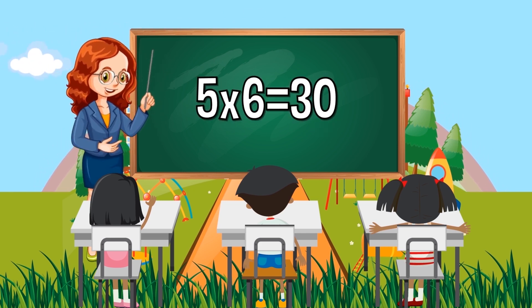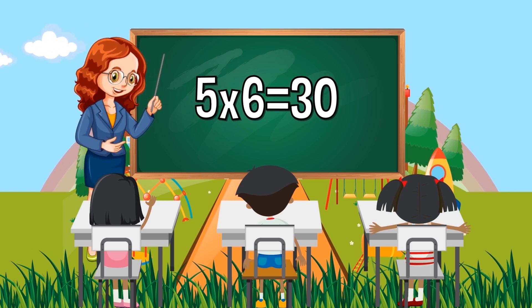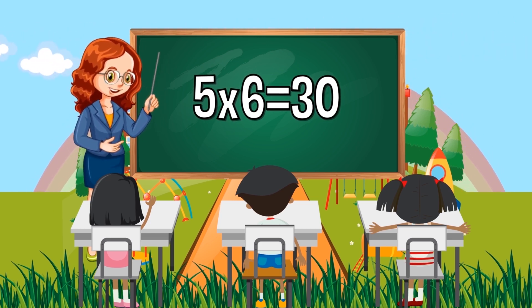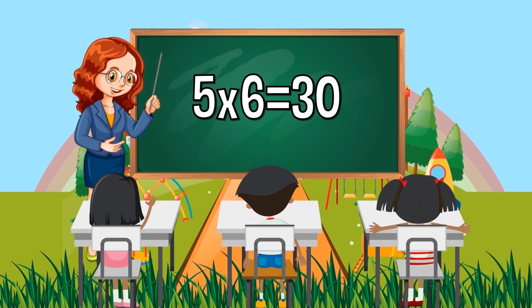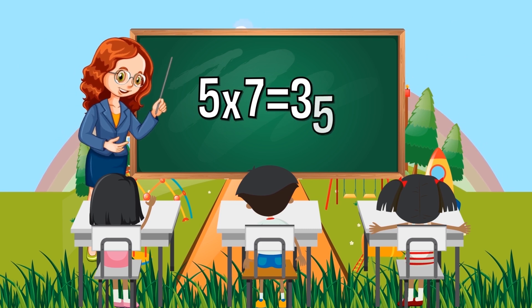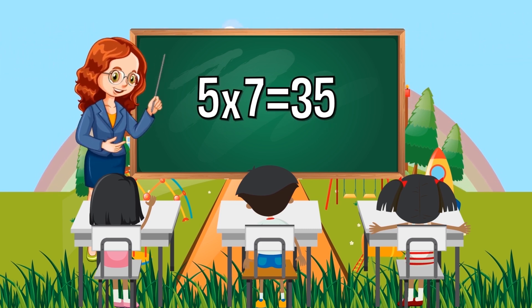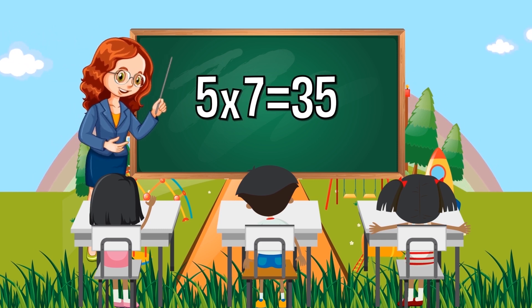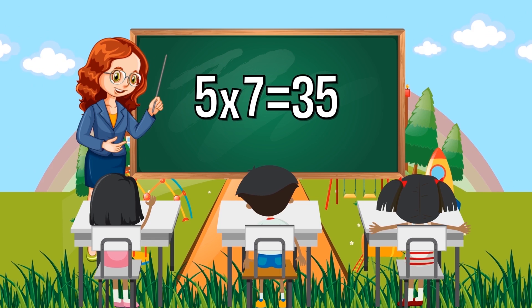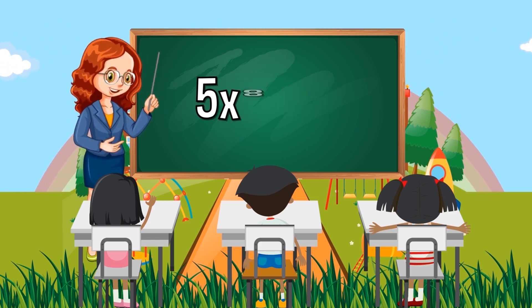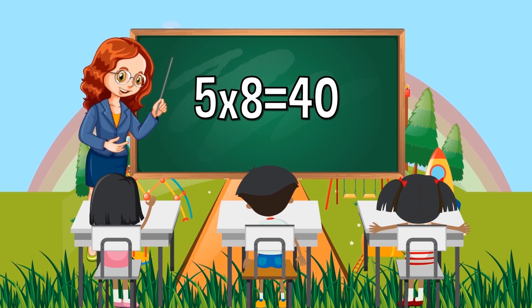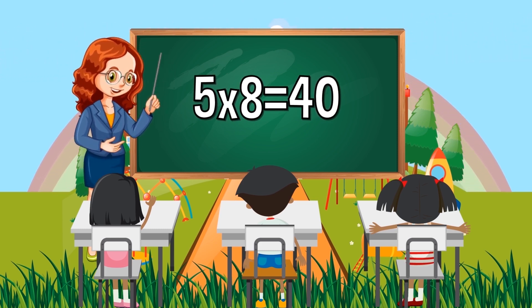5 times 6 equals 30. 5 times 7 equals 35. 5 times 8 equals 40.